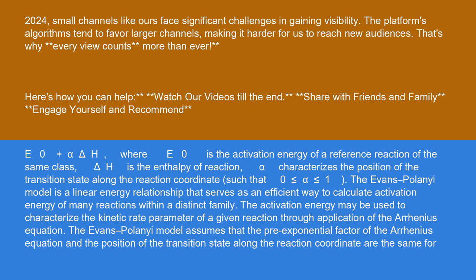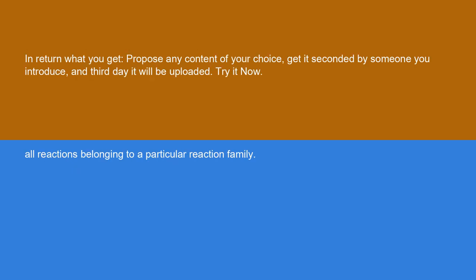The Evans-Polanyi model is a linear energy relationship that serves as an efficient way to calculate the activation energy of many reactions within a distinct family. The activation energy may be used to characterize the kinetic rate parameter of a given reaction through application of the Arrhenius equation. The Evans-Polanyi model assumes that the pre-exponential factor of the Arrhenius equation and the position of the transition state along the reaction coordinate are the same for all reactions belonging to a particular reaction family.